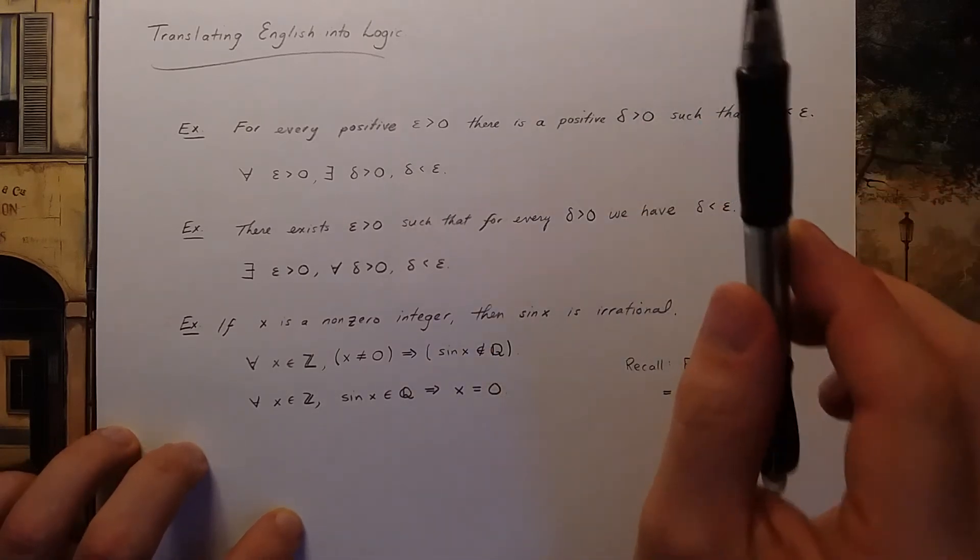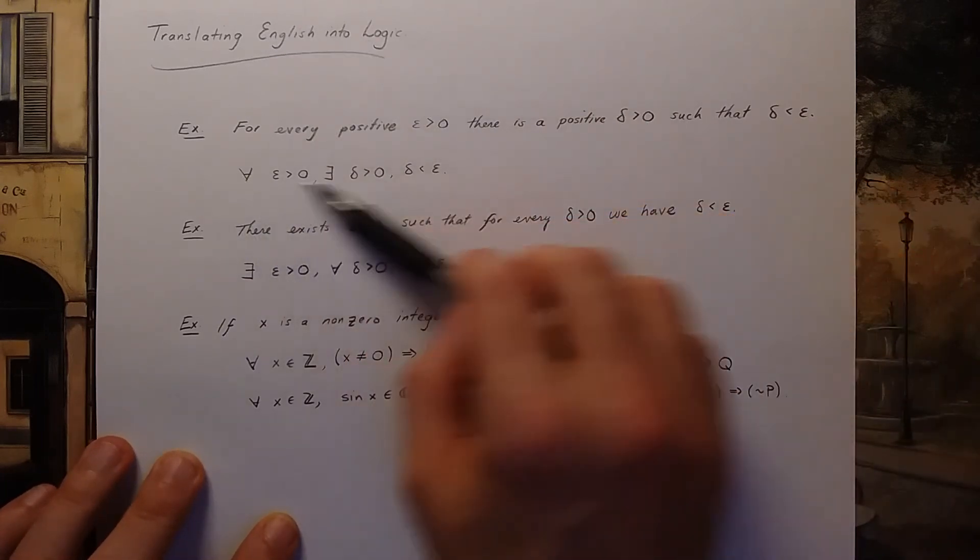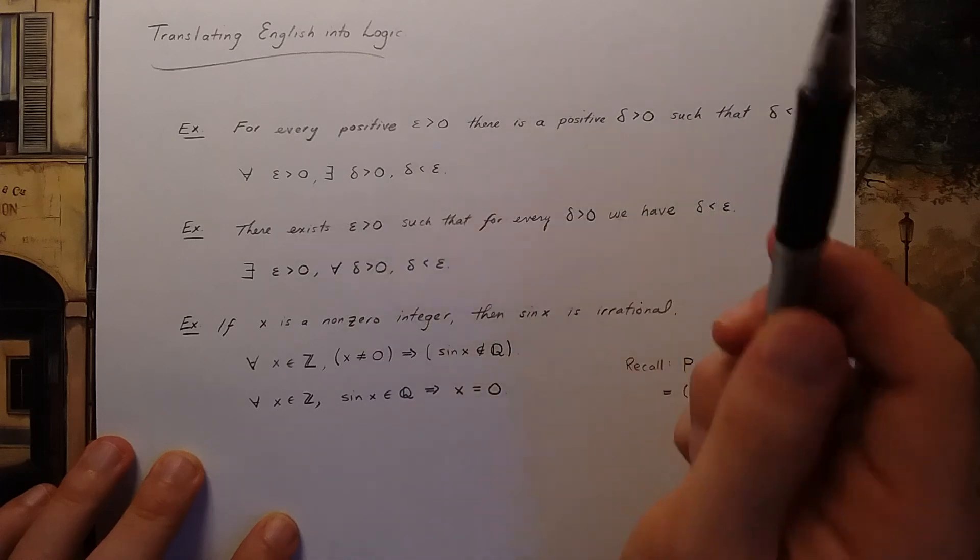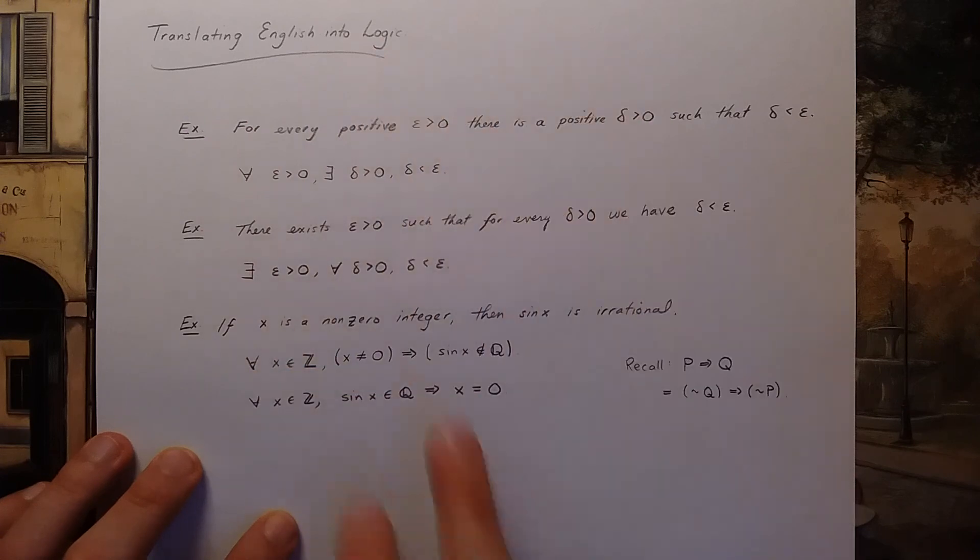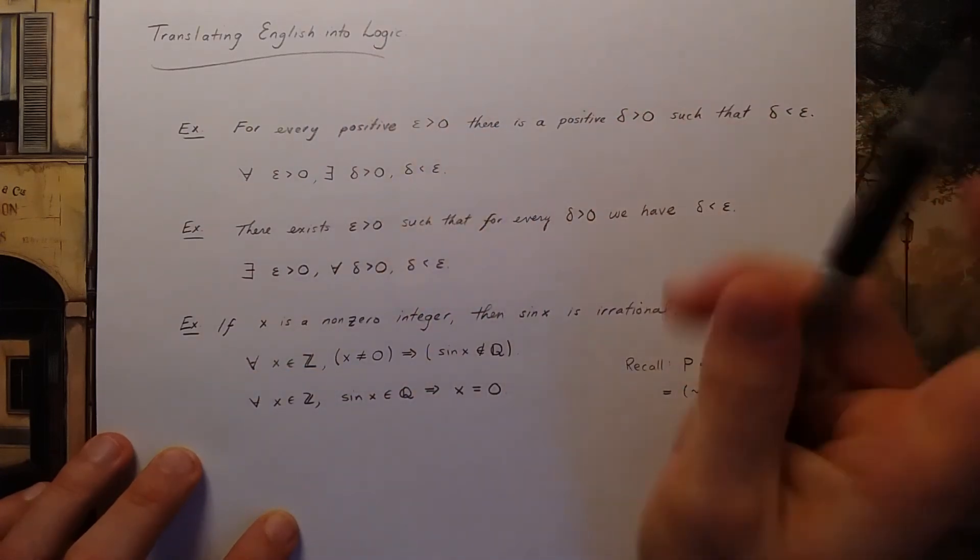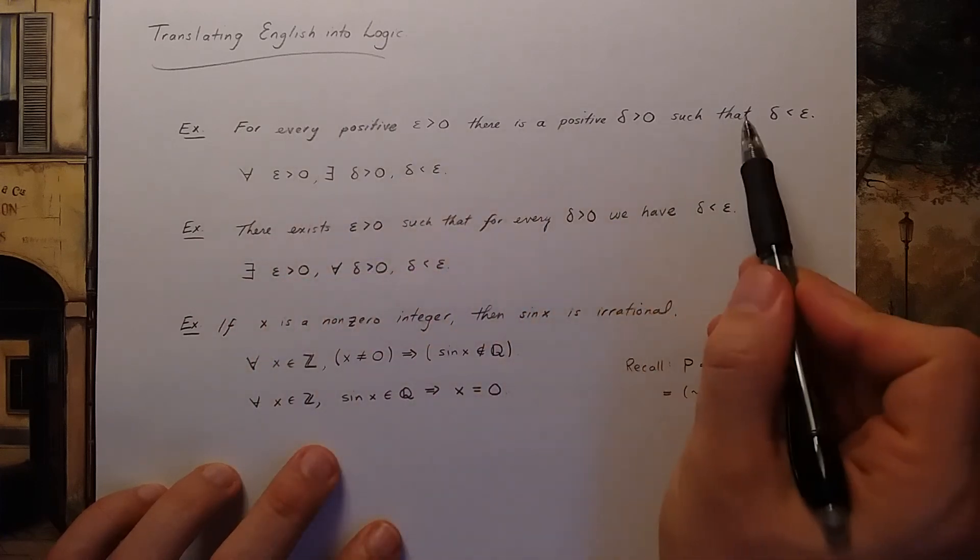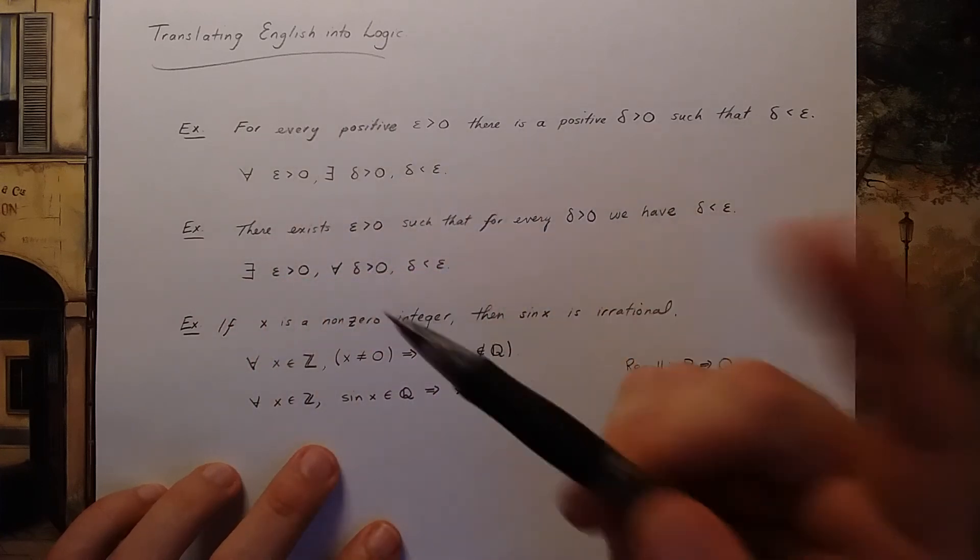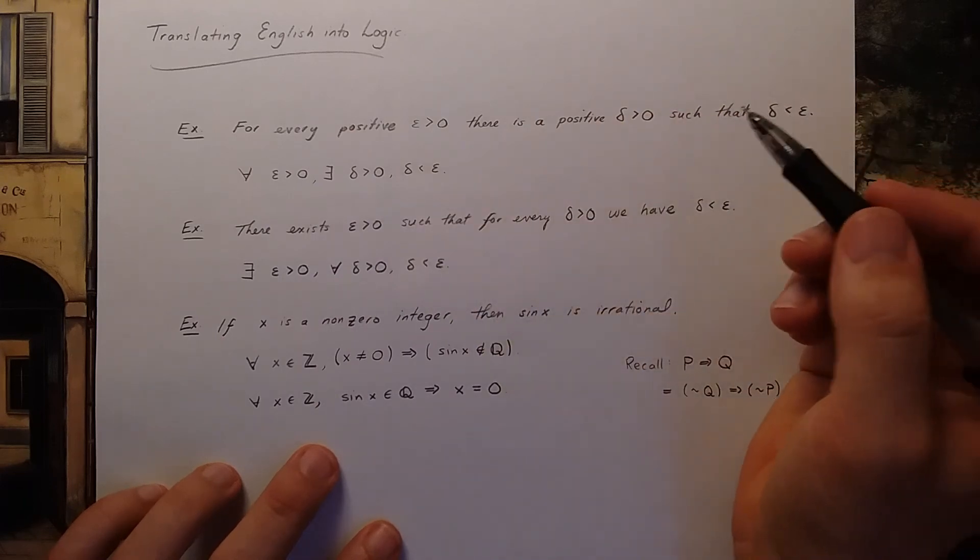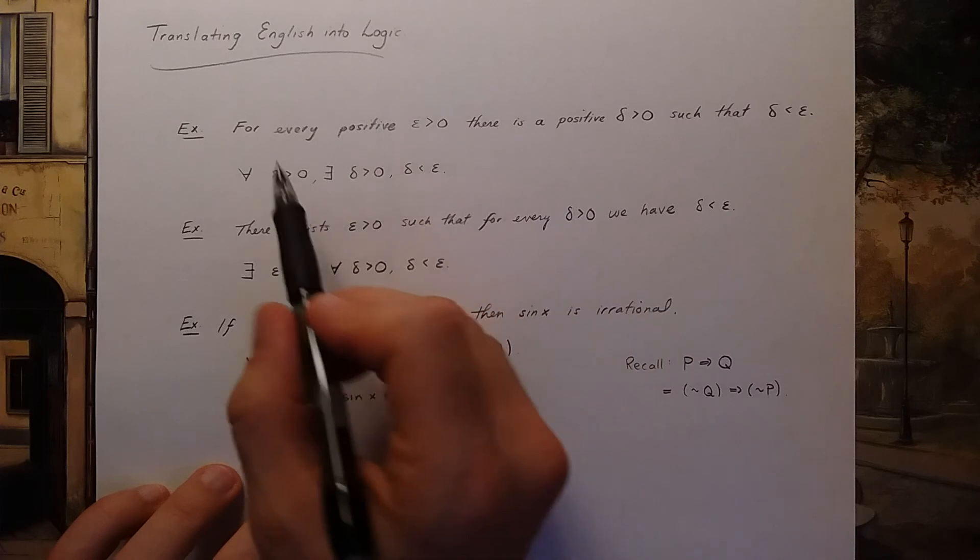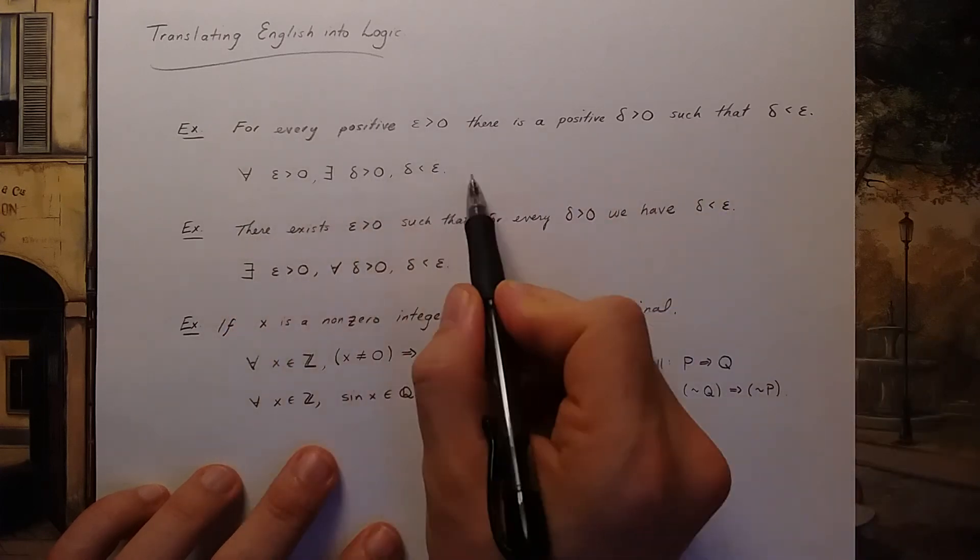So in this video I'm showing you the relationship between English sentences and propositional logic statements. But when we start to write proofs, when we actually write an explanation of why something's true, I'd like you to use the English sentences because we are not robots. We write mathematical proofs for other humans to read and when humans read it's much easier to see an English sentence than a string of obscure characters.